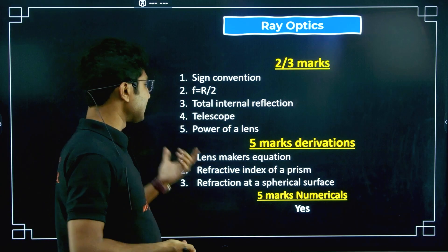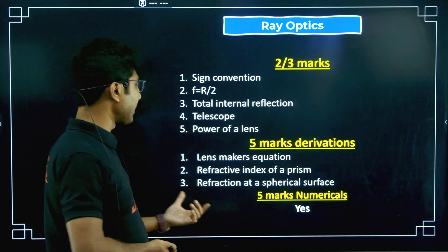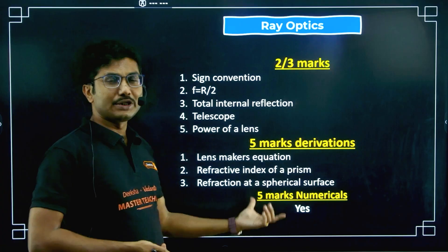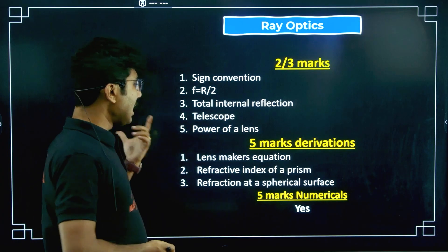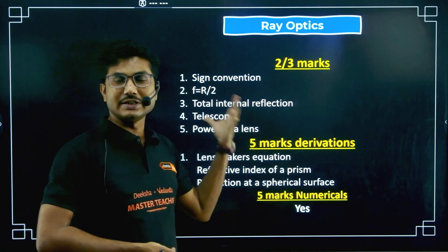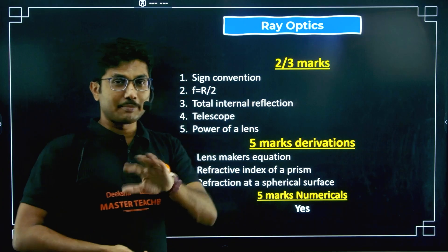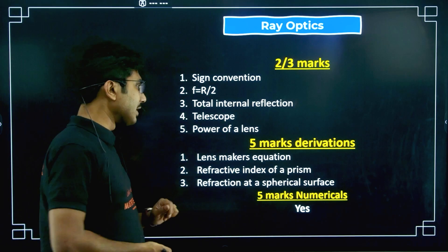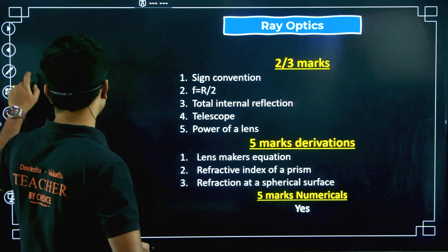For five-mark derivations from Ray Optics: the lens maker's equation is very very important. The refractive index of a prism is also very very important, and refraction at a spherical surface is also very very important — this question came last year in Bangalore South. So this is also a very very important derivation.